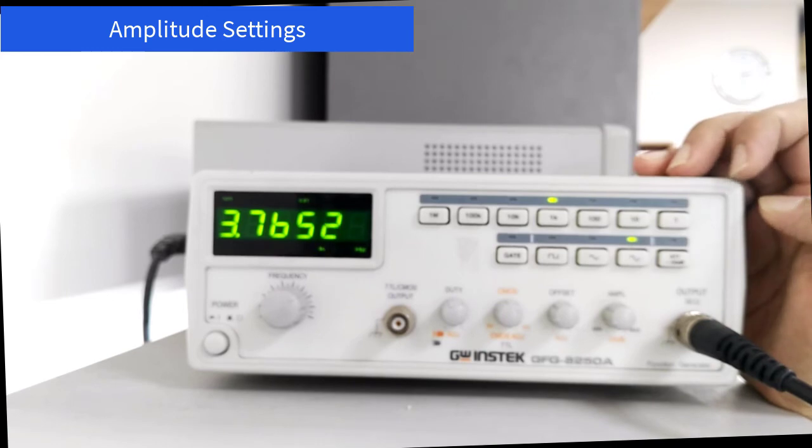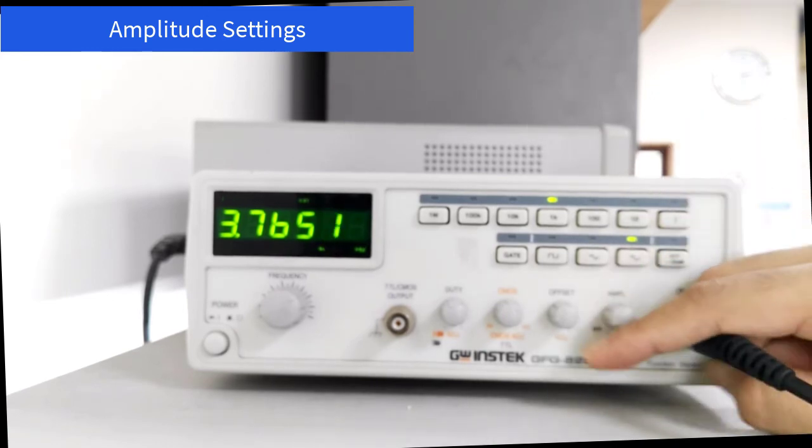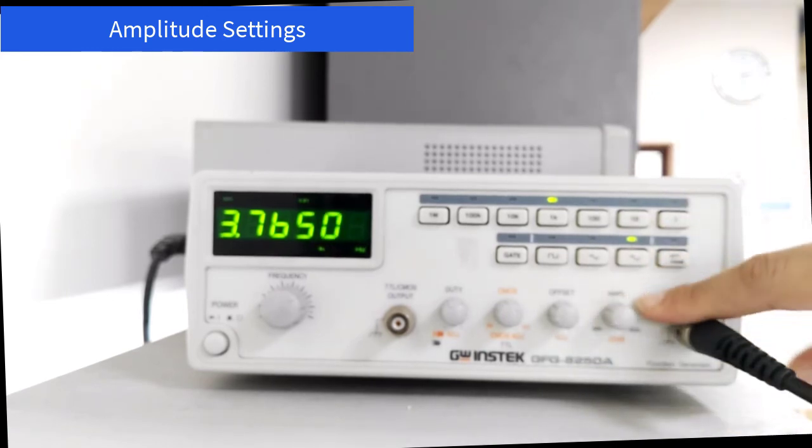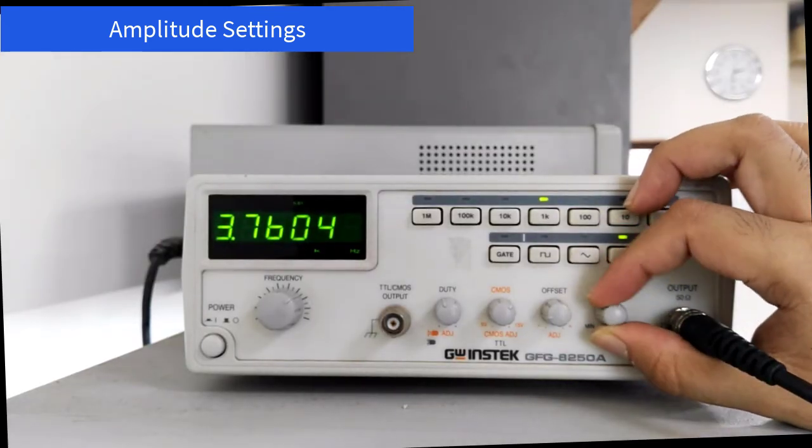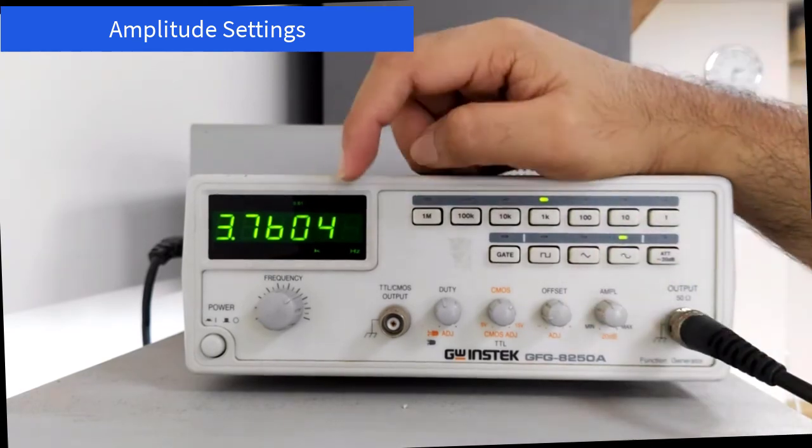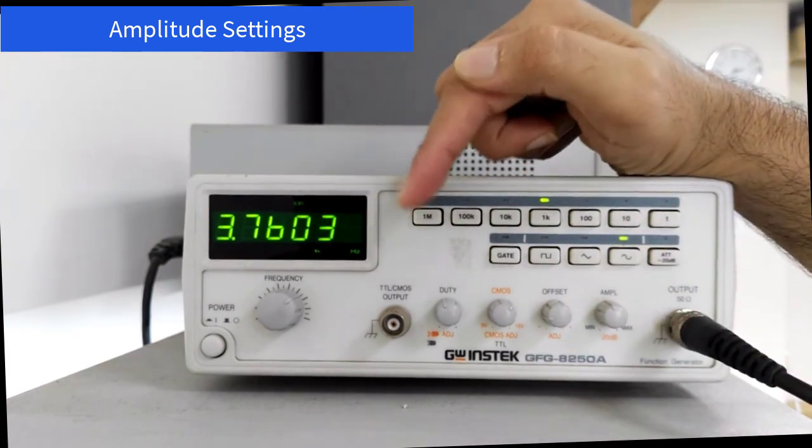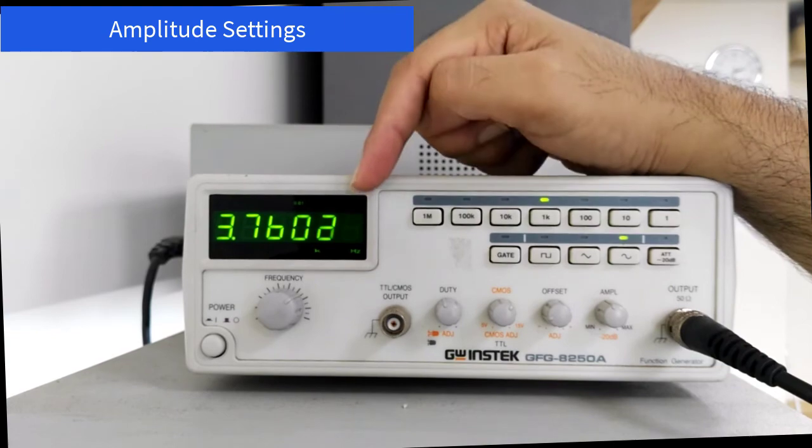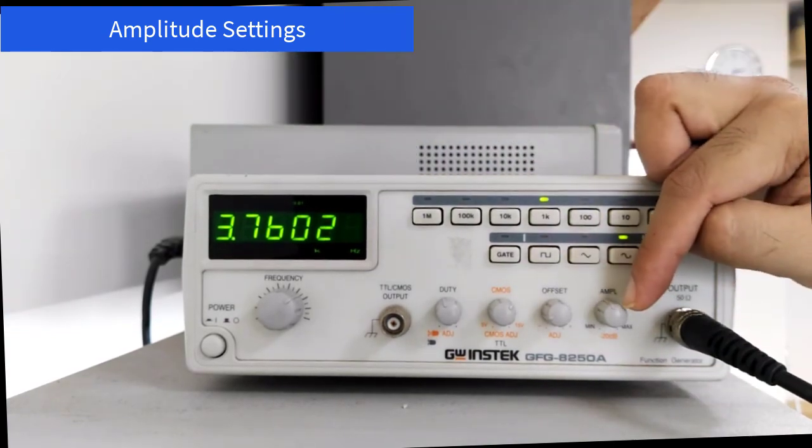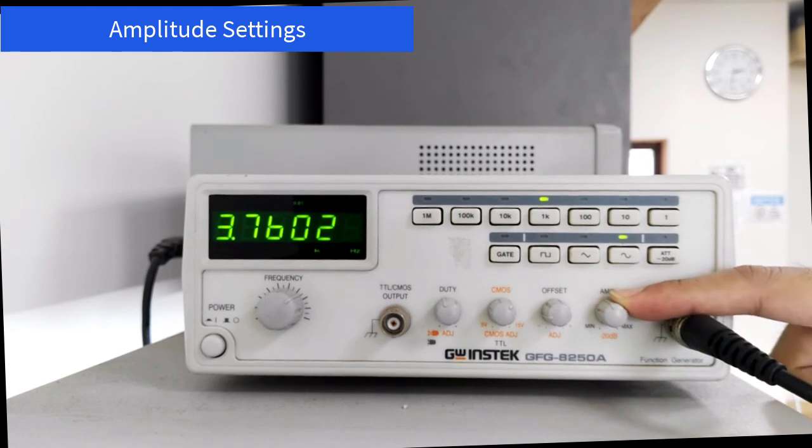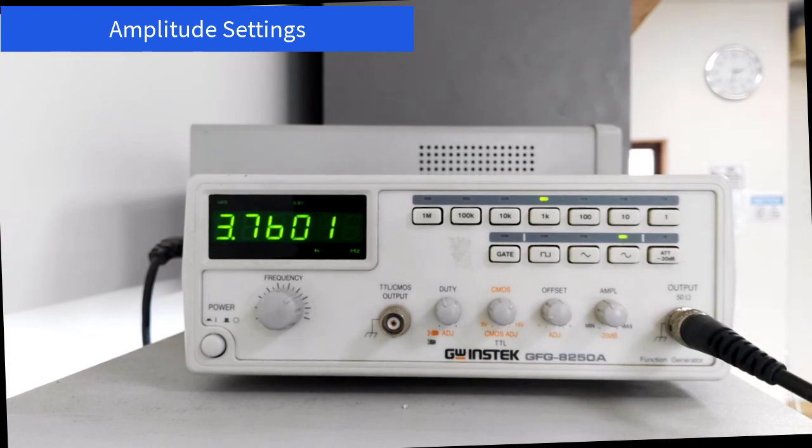You will see that there is a label AMPL. This is the amplitude knob to change the amplitude. However, you will not get the amplitude being supplied in this display. This display does not show the current amplitude value. To get this amplitude value, you will have to connect this output to the oscilloscope and you will get the reading from there.